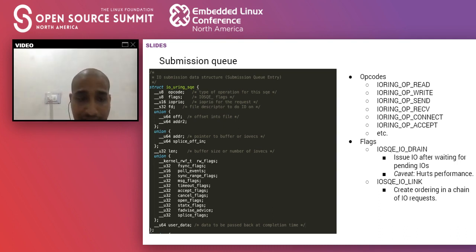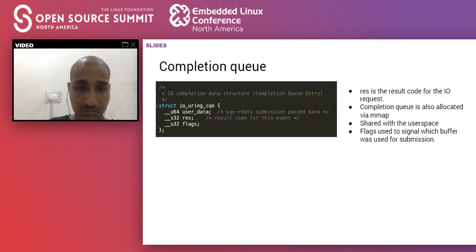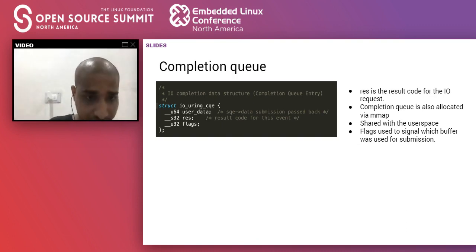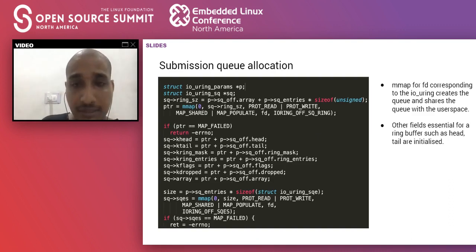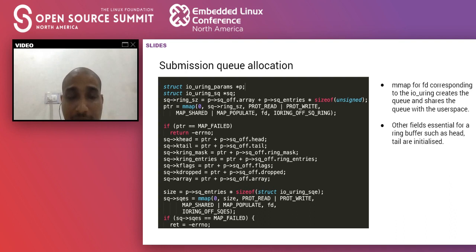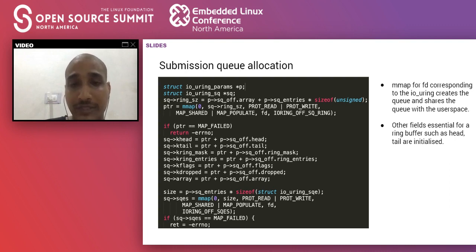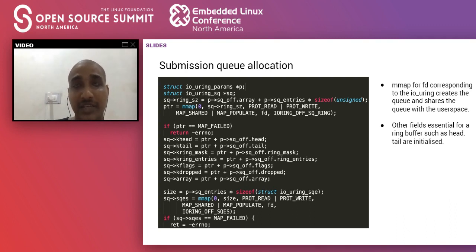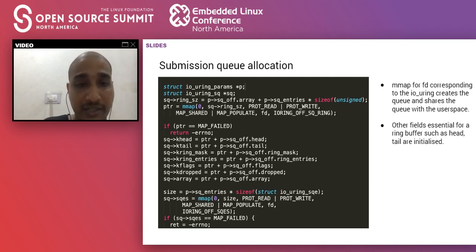Initializing the SQE involves creating shared memory space between user and kernel and initializing metadata around head and tail entries, along with drop and offset metadata. The code is somewhat complex because it's a ring buffer with head and tail management, flags, and metadata tracking. After having all this metadata initialized, we complete our submission queue entry struct.